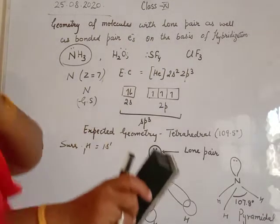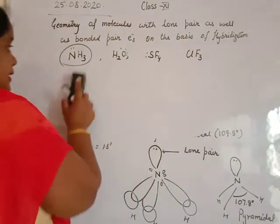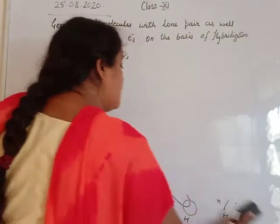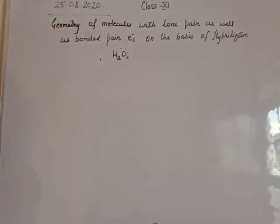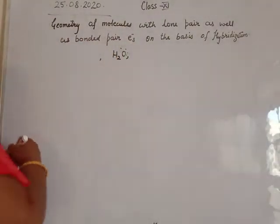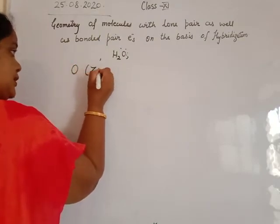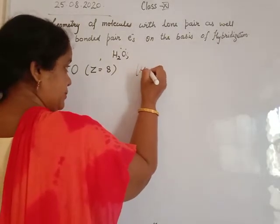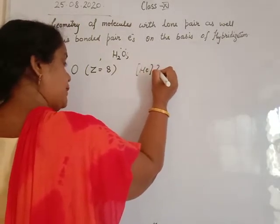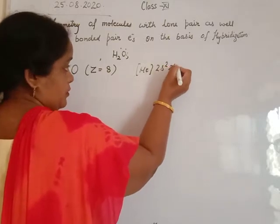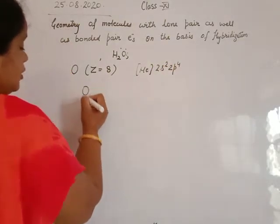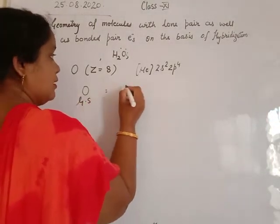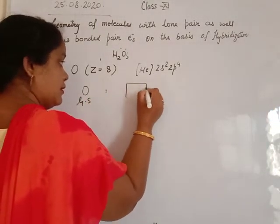Our next molecule is water. The central atom of water is oxygen — hydrogen is never the central atom. The atomic number of oxygen is 8. Its electronic configuration is: helium core, 2s2, 2p4. We draw the orbital diagram for oxygen in the ground state. Only the outermost shell will be used, which is the second shell.